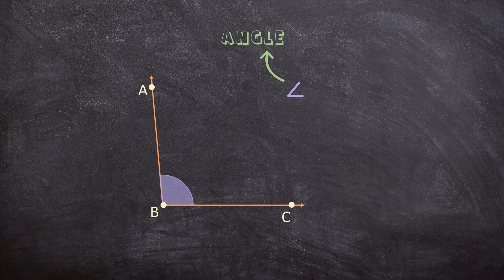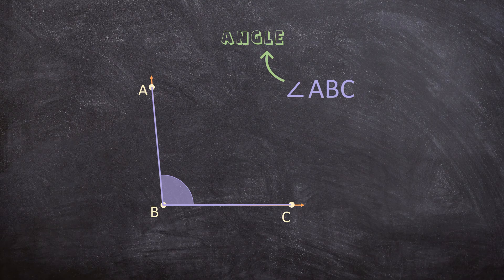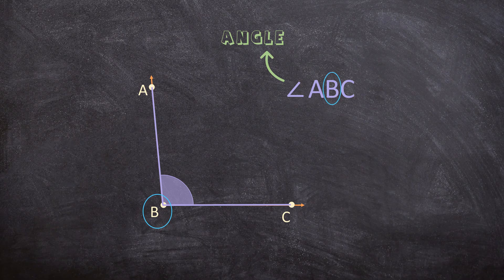So this angle will be angle ABC and I want you to notice that the vertex should always be the middle letter in the name.